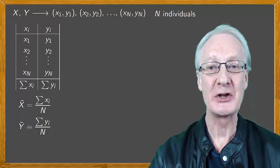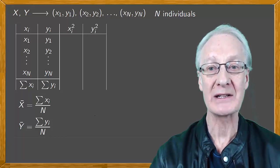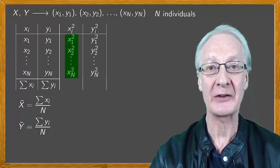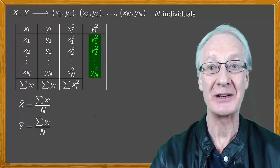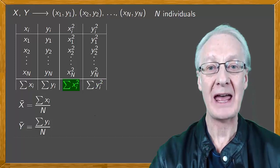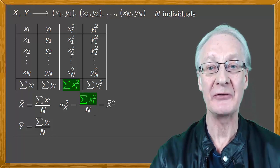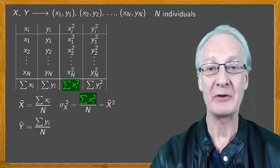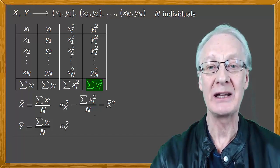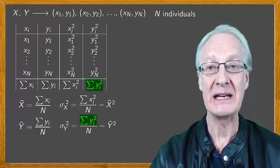We'll now add two new columns in which we'll write the values of xi squared and yi squared and at the bottom of these columns we'll have the sum of the xi's squared and the yi's squared. From these sums we can obtain the variances. The variance of x, sigma x squared, is the sum of the squared xi's divided by n minus the average of x squared. And likewise, the variance of y, sigma y squared, is the sum of the yi squared divided by n minus the mean of y squared.